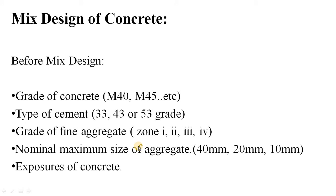So till now you have learned about grade of concrete, type of cement, grade of fine aggregate, and nominal maximum size of aggregate. You have also seen in the last videos how important it is to find the grade of fine aggregate or sand, and the nominal maximum size of aggregate, and how these two factors determine the proportion of your coarse aggregate and fine aggregate. So the next factor to design the concrete is your exposure of concrete.